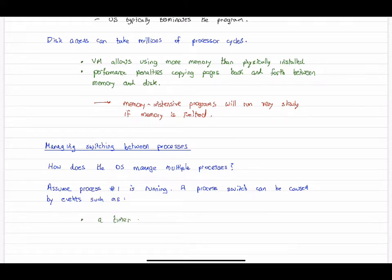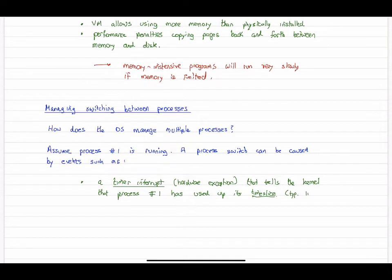In the absence of any other system activity, a timer interrupt can be generated automatically. This creates a hardware exception and tells the kernel that process number one has used up its time slice, and it's time to share the processor with another process. A time slice is typically short, in the order of 10 milliseconds or so, and that gives the appearance of the processor sharing the resources equally among these processes.